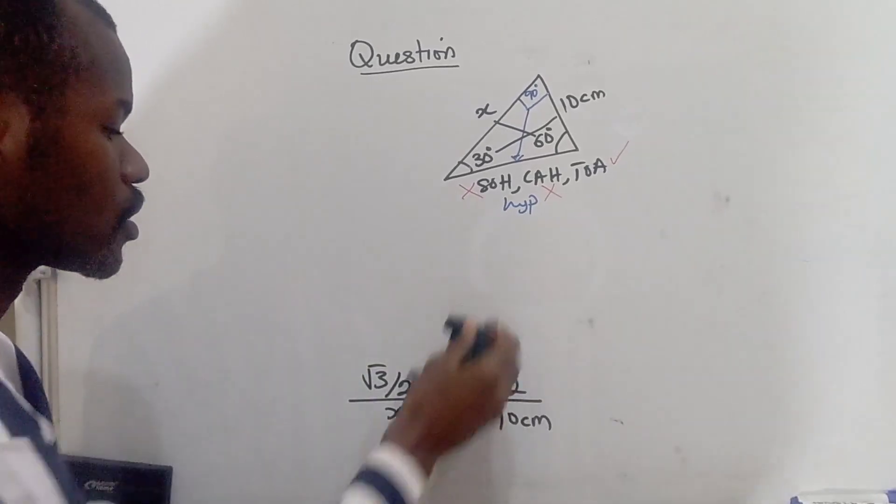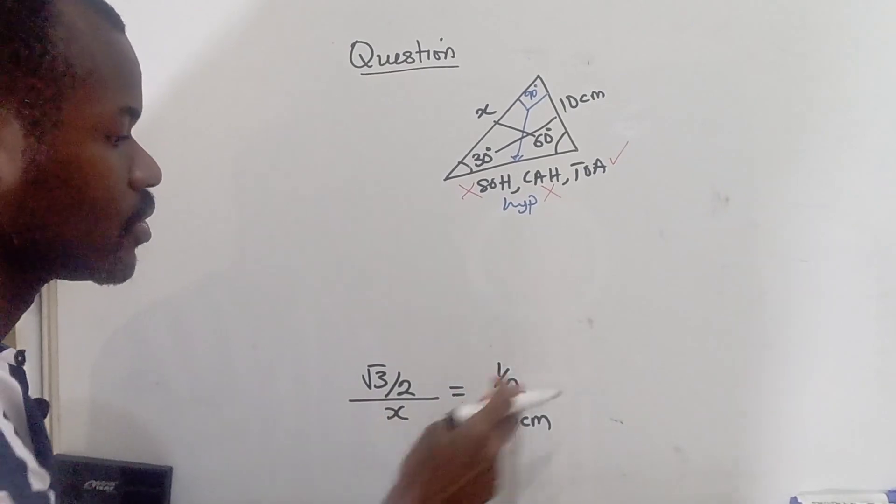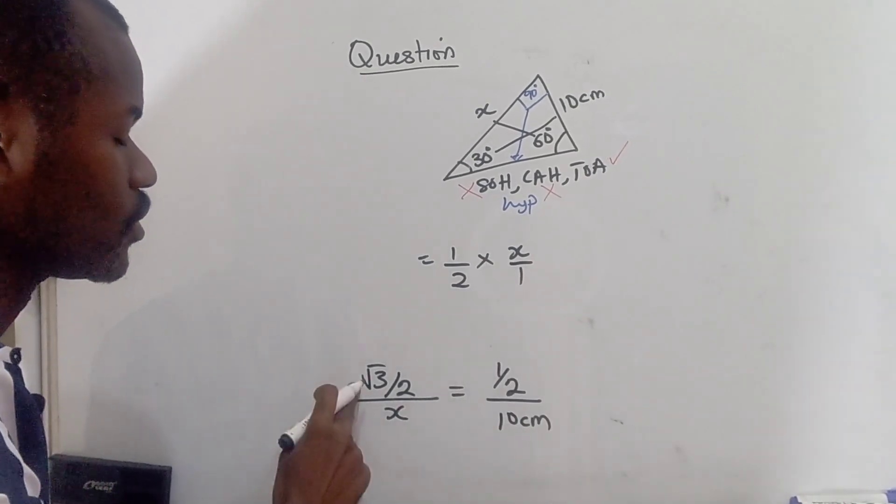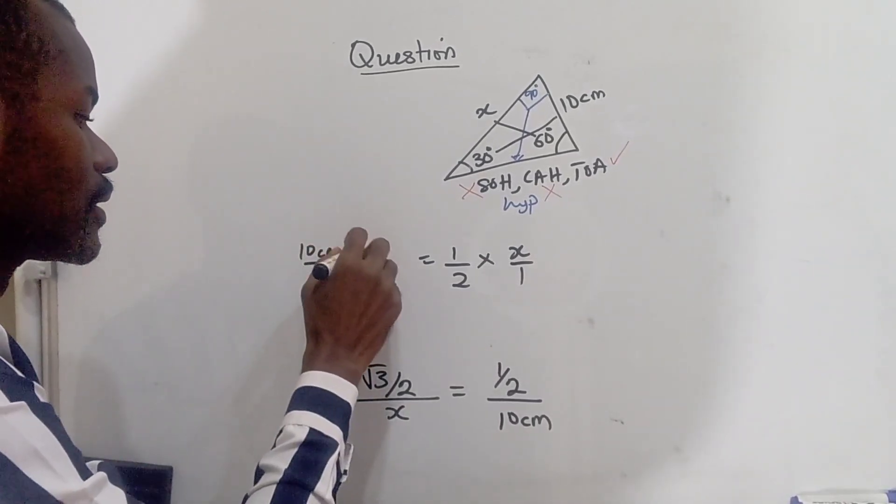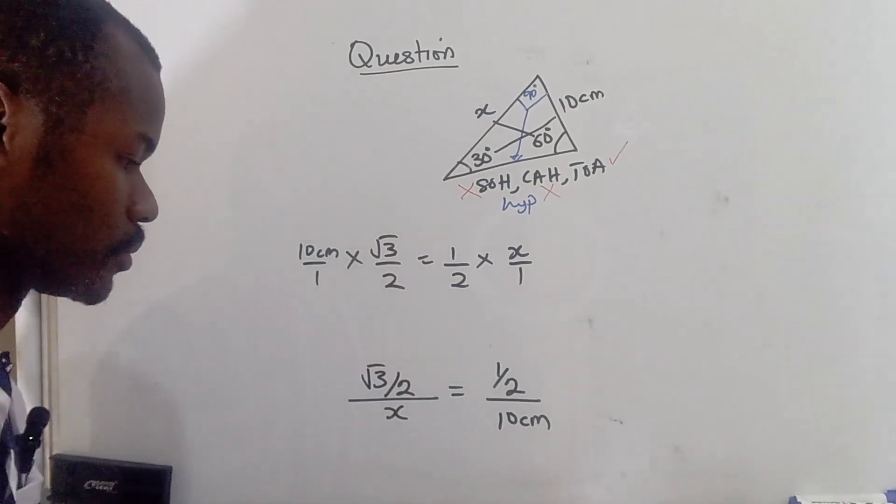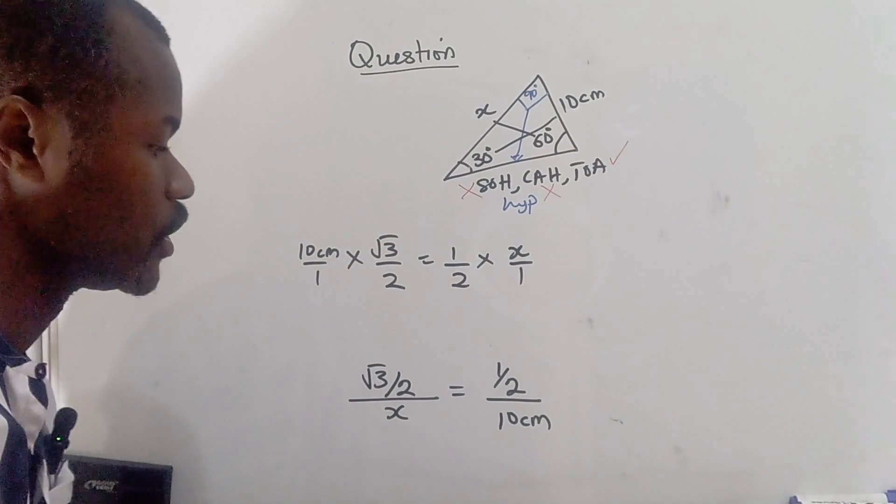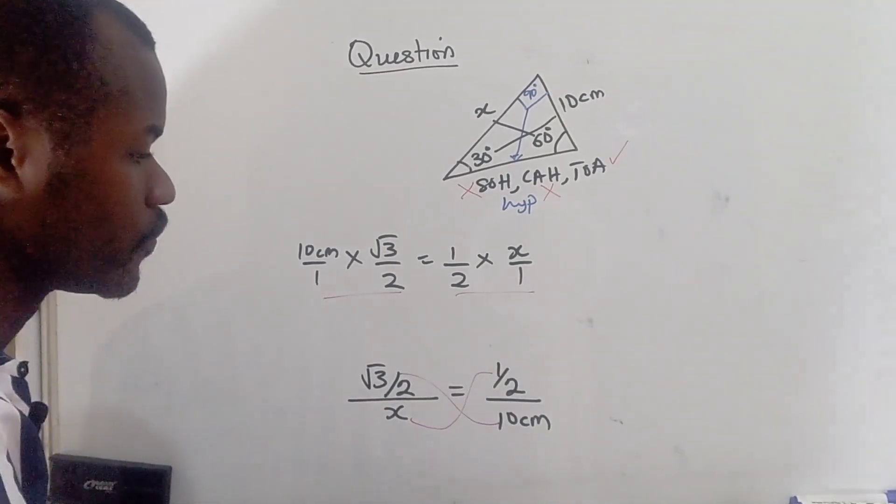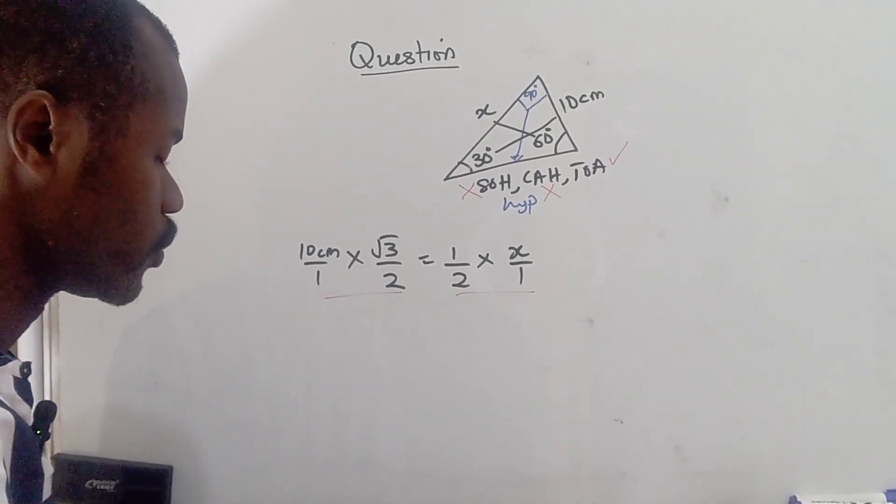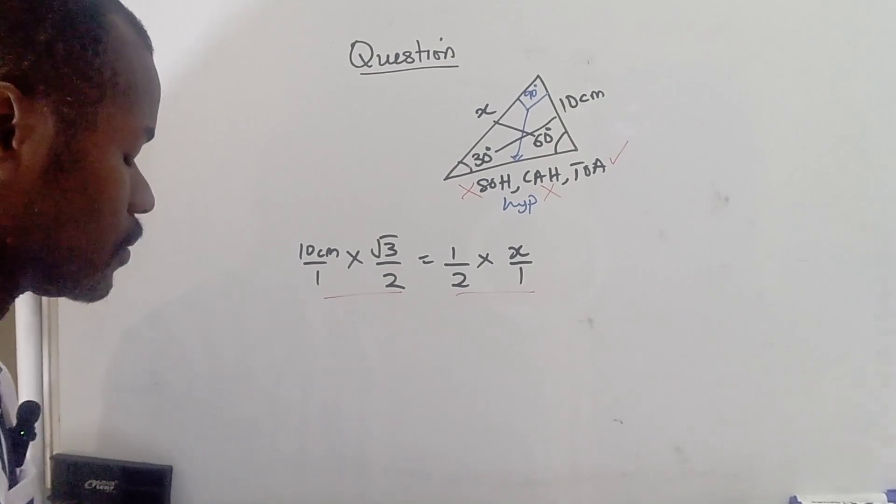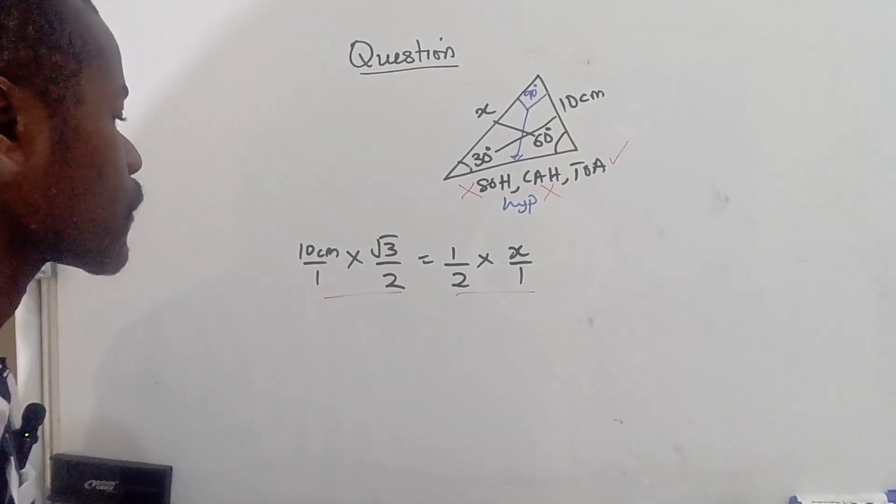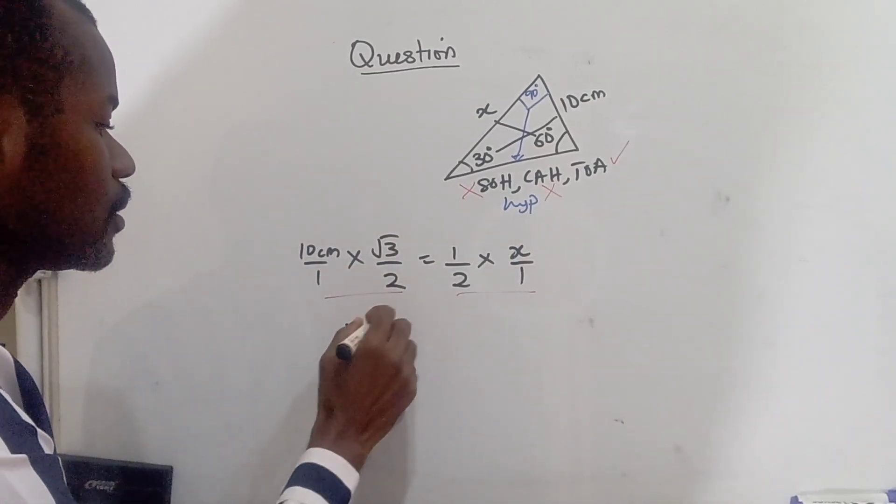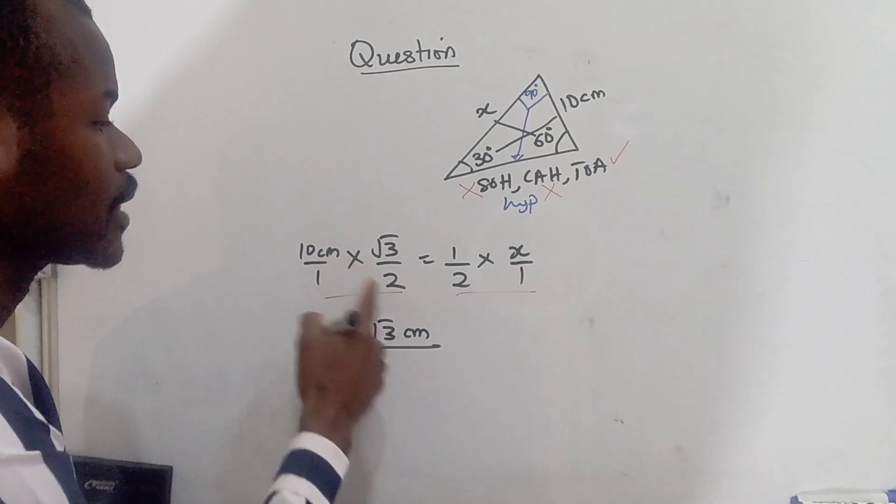So from this, we can cross multiply to solve for x. So x is going to multiply this. So half times x over 1. And 10 is going to multiply this. So 10 centimeter over 1 times root 3 over 2. So this for simple cross multiplication, this multiplies this, and this multiplies this. That's what we have here. So from that, let's see. We'll simplify for now what we are going to get.